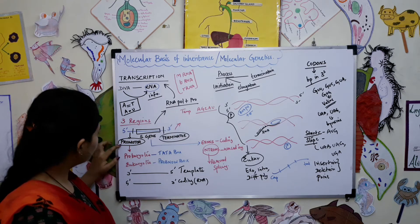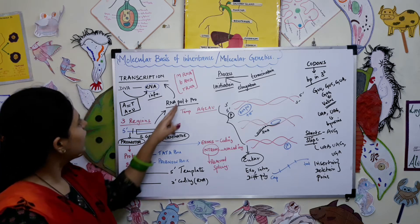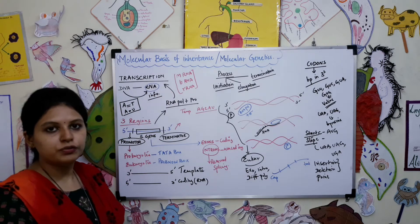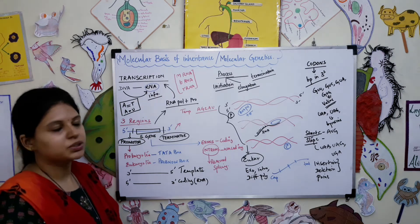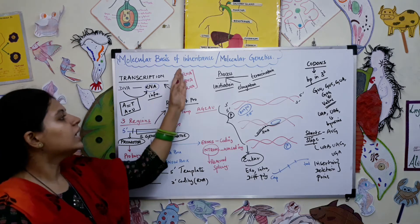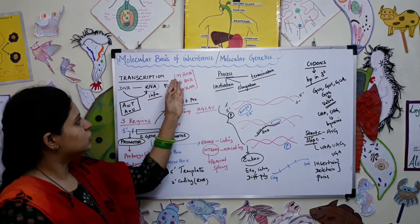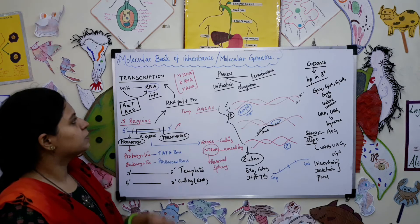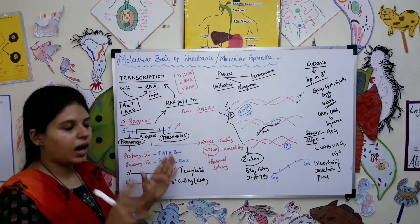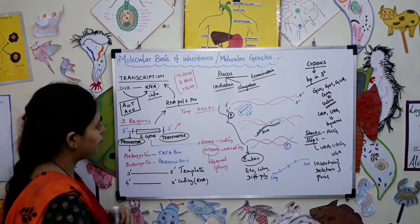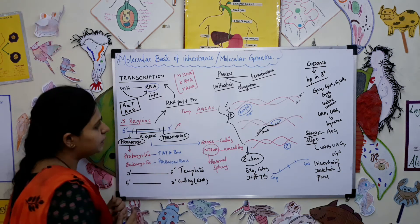RNA polymerase along with the promoter region carries out the process of transcription. Three types of RNA are involved in transcription: messenger RNA, transfer RNA, and ribosomal RNA.